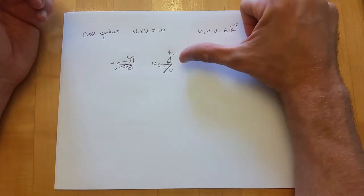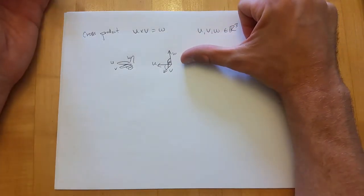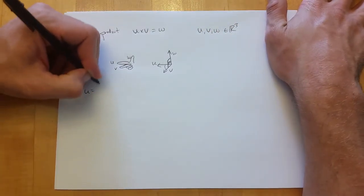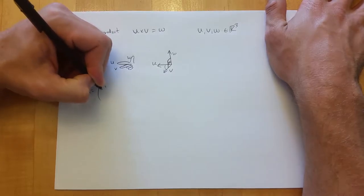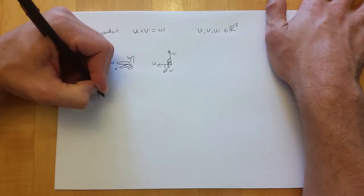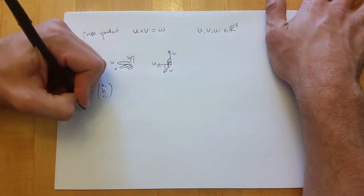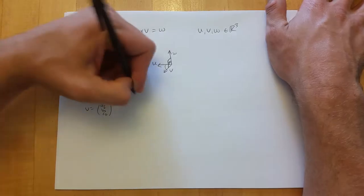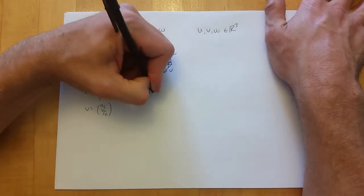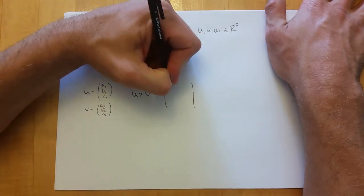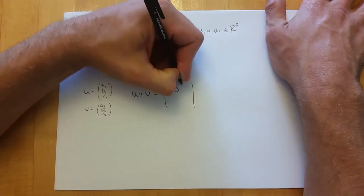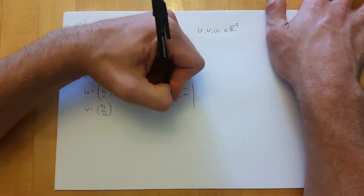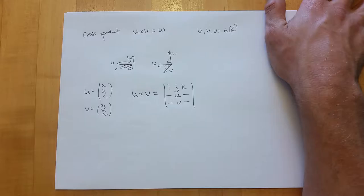W is coming off perpendicular — so if u and v are in the paper, w is coming out. The angle between u and v does not need to be a right angle. However, if that angle is zero or 180 degrees, they're parallel, and the cross product is undefined or zero.